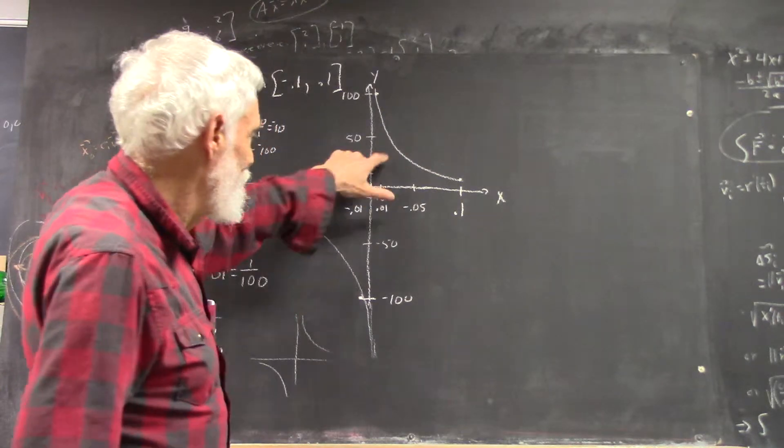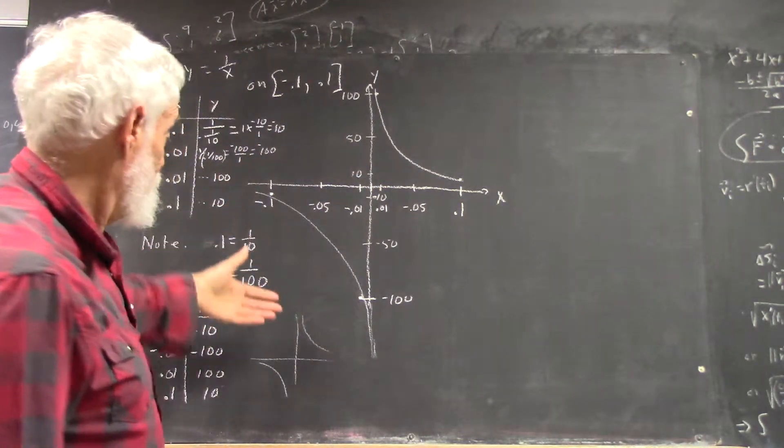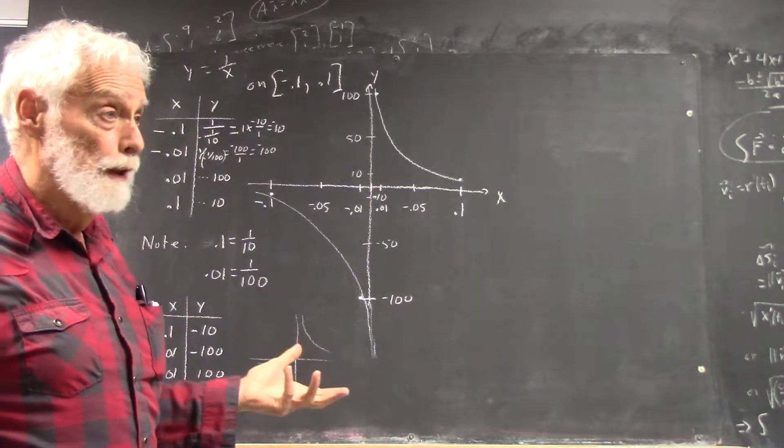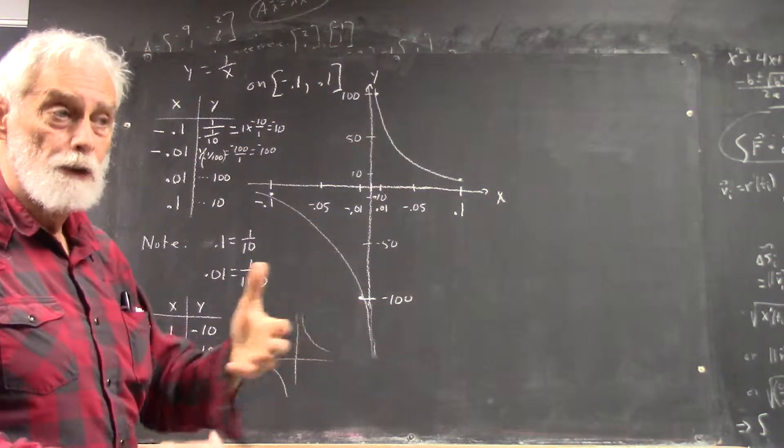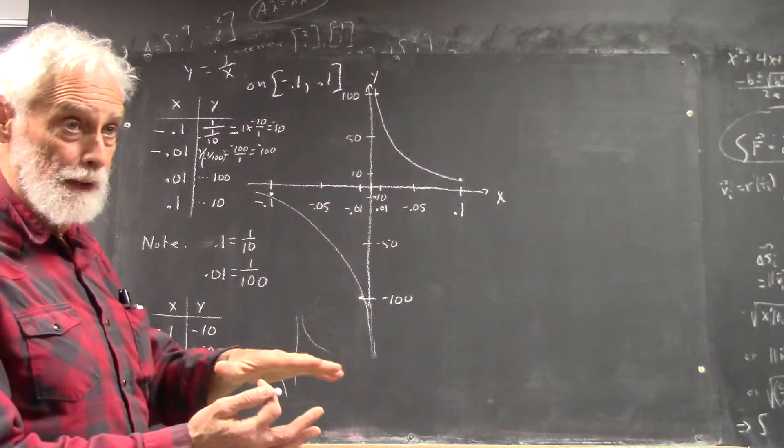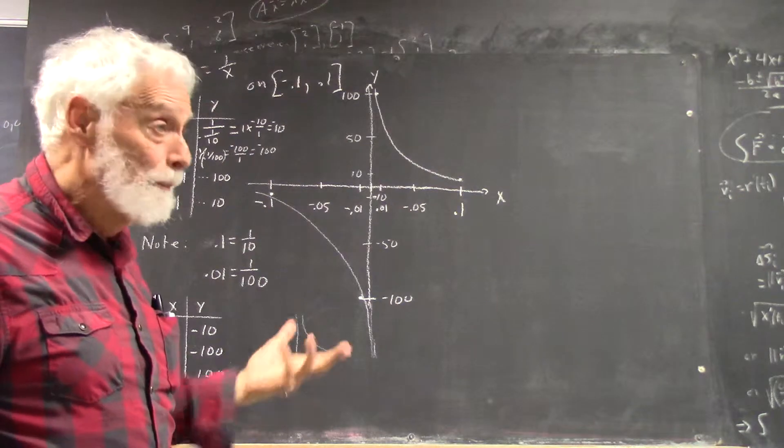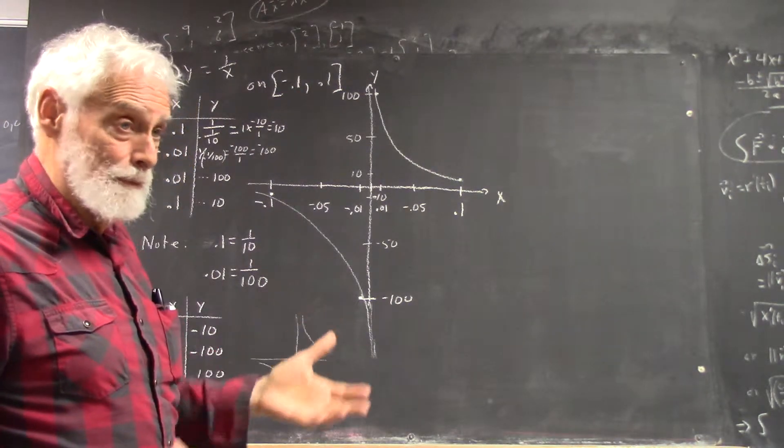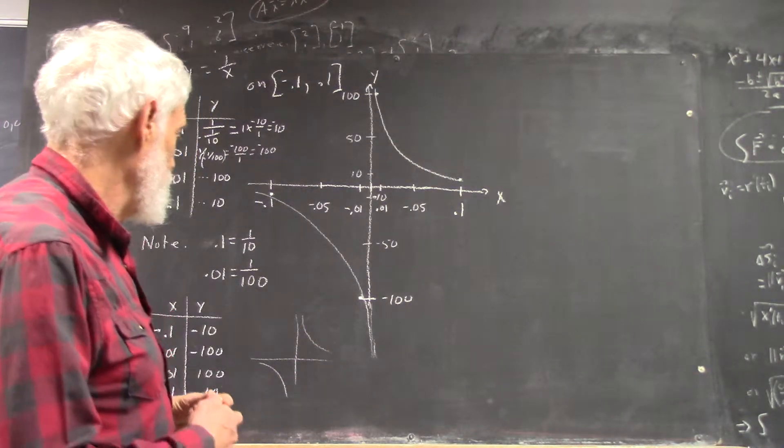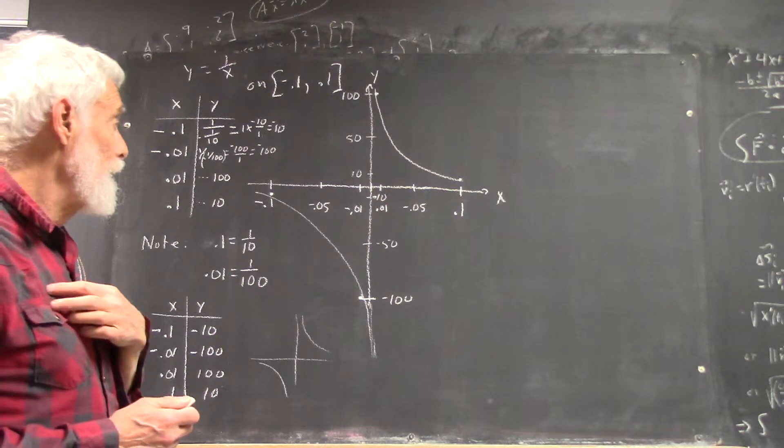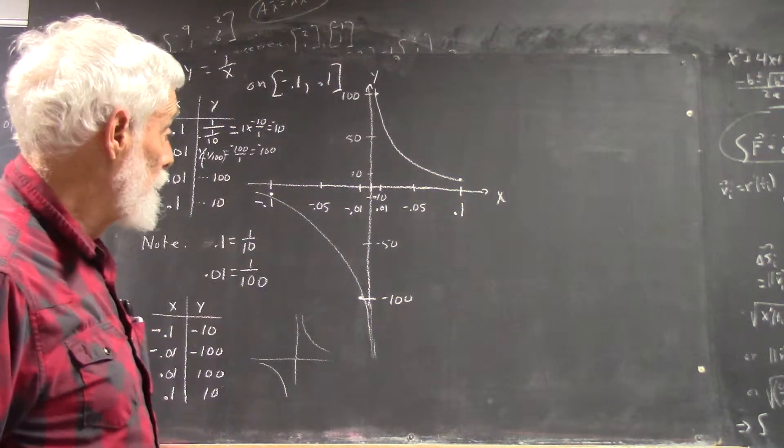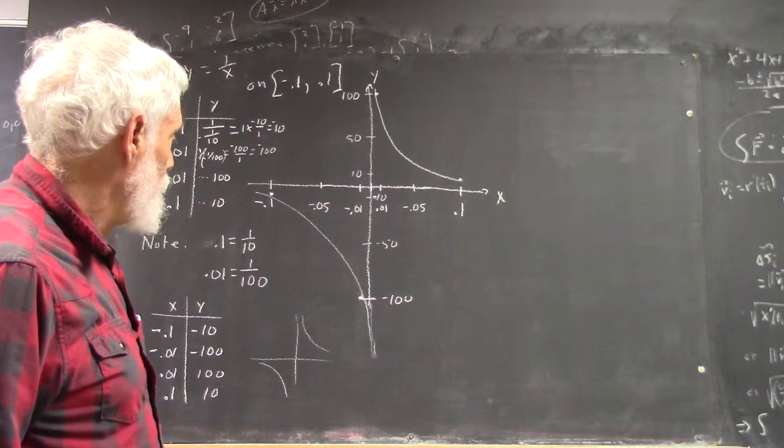Now, and it looks pretty much just like a graph of 1 over x would be, depending on how you scale your axis. Sometimes it would be flatter, sometimes it would be sharper. But it just depends on how you decide to scale your axis, exactly what it looks like. But it has the basic characteristics.